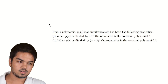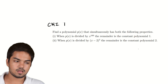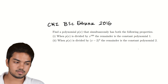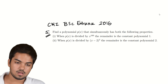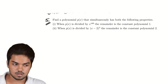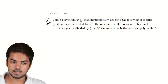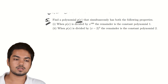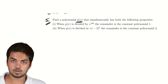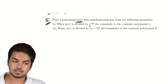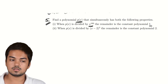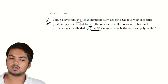This problem is from the CMI BSC entrance 2016, subjective problem number 5. We want to find a real polynomial p(x) — a polynomial with real coefficients — that has both the following properties: when p(x) is divided by x^100, the remainder is the constant polynomial 1; and when p(x) is divided by (x−2)^3, the remainder is the constant polynomial 2.